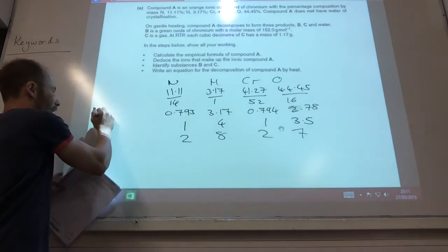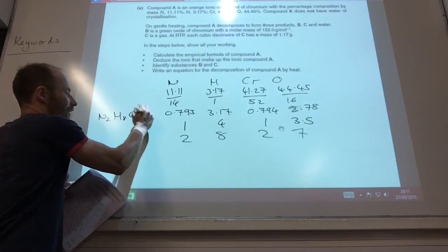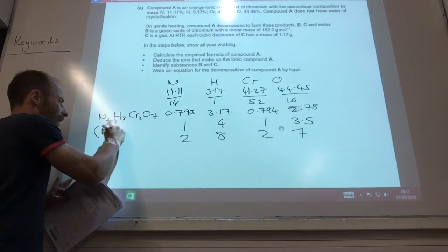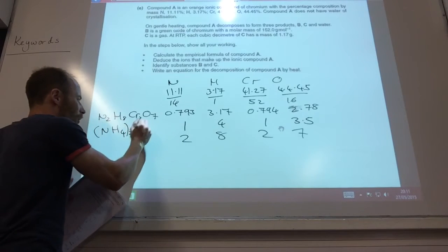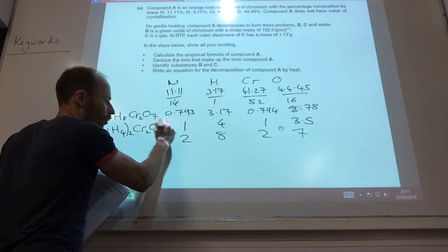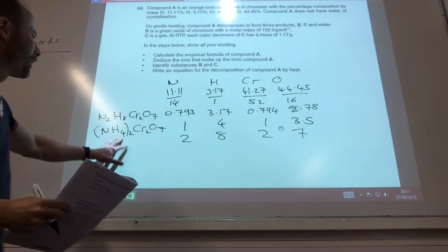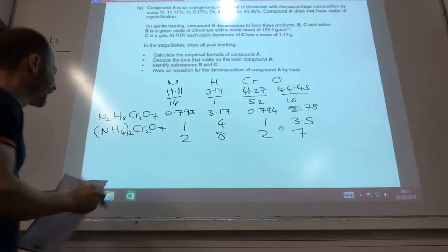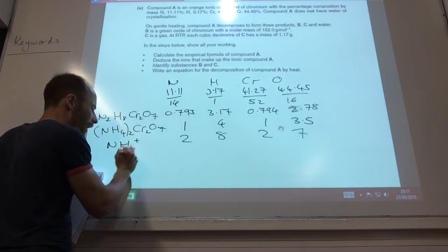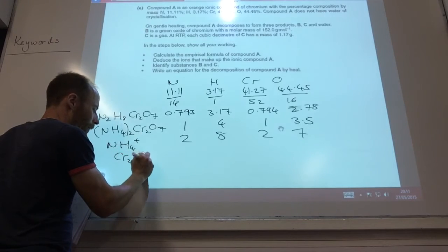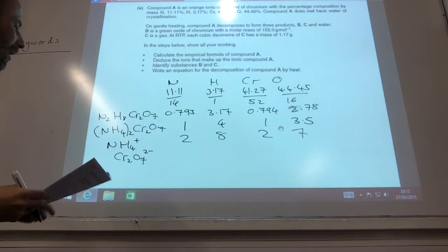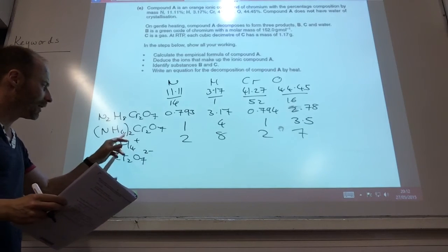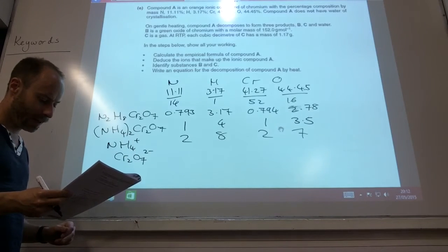So your formula is N2H8Cr2O7. But hopefully, you recognize N2H8 is NH4 twice, or ammonium, if you remember. So it's ammonium dichromate, like so. So it contains the NH4 plus ion and Cr2O7 2- ion. It's got to have two minuses, because you've got two ammoniums, each of which are a plus charge.